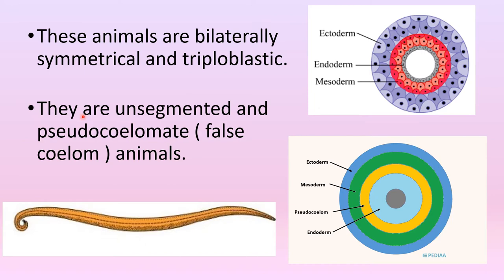Nematodes are unsegmented and pseudocoelomate animals. A pseudocoelomate is an organism with a body cavity that is not derived from the mesoderm as in a true coelom. You can see this in the diagram here.